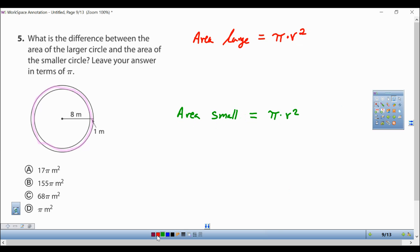Now what will the area of the large circle be? From the center to the outside of the circle would be 8 plus 1, so the radius is going to be 9.